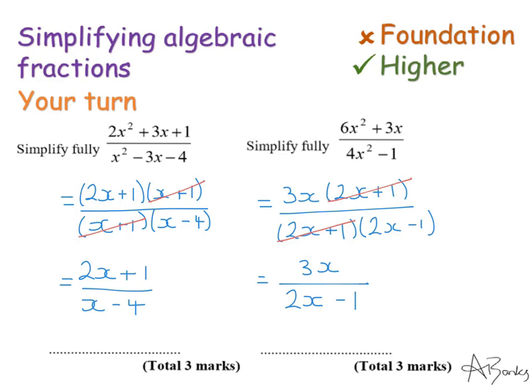Here's the solutions. So in this first one I factorised the denominator first here, and that gave me a clue what I was looking for in the top one. And then you should see that the x plus 1 cancels out. So you're left with 2x plus 1 over x minus 4.